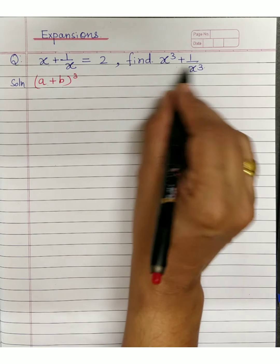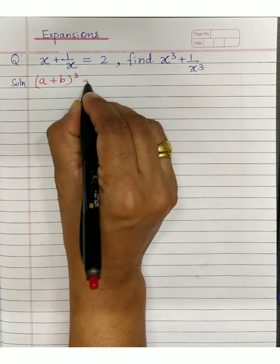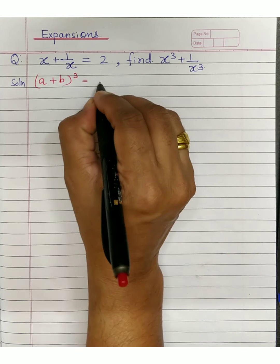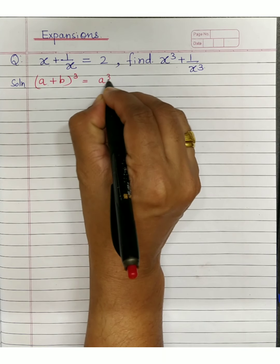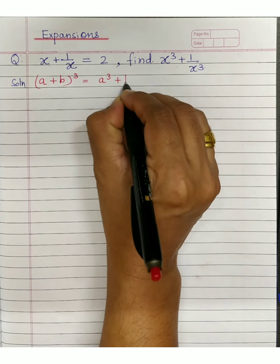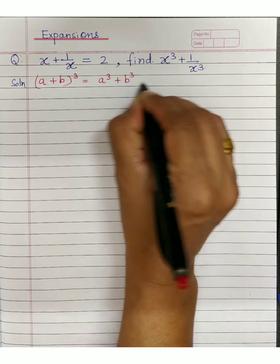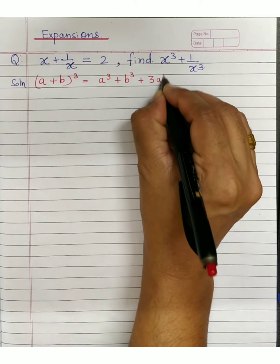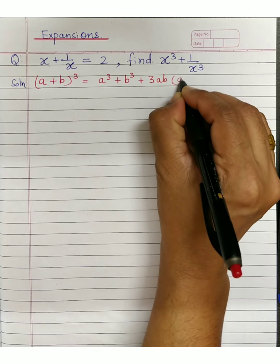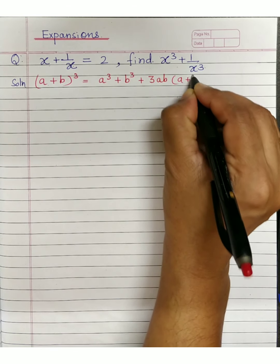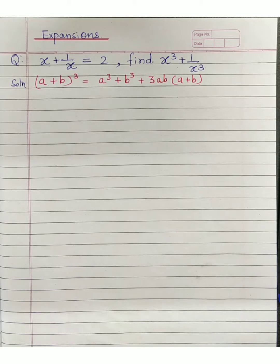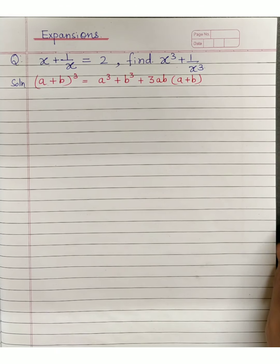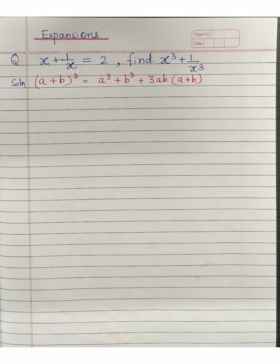Using this formula, you will be able to get the term a cube plus b cube. We will write this formula in short form: a cube plus b cube plus 3ab bracket a plus b. We use it in this way so that we can easily work out what is being asked.